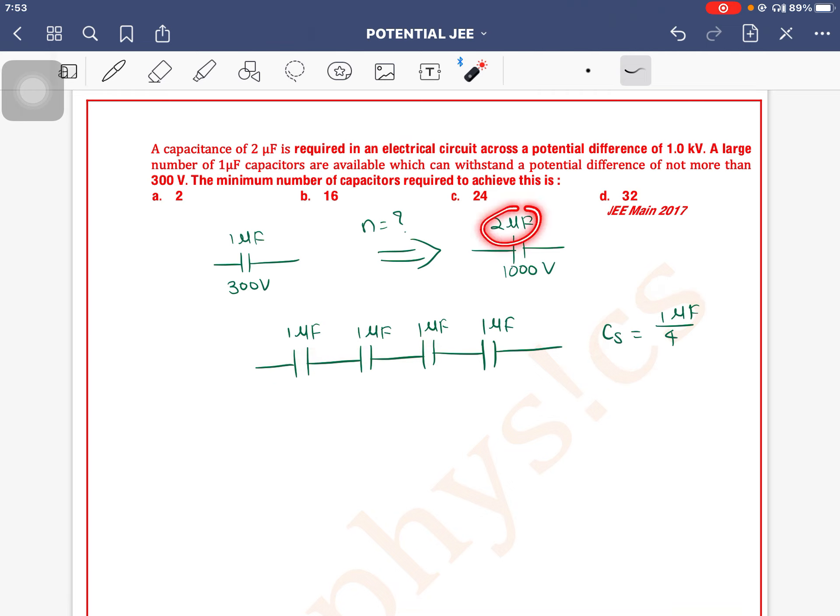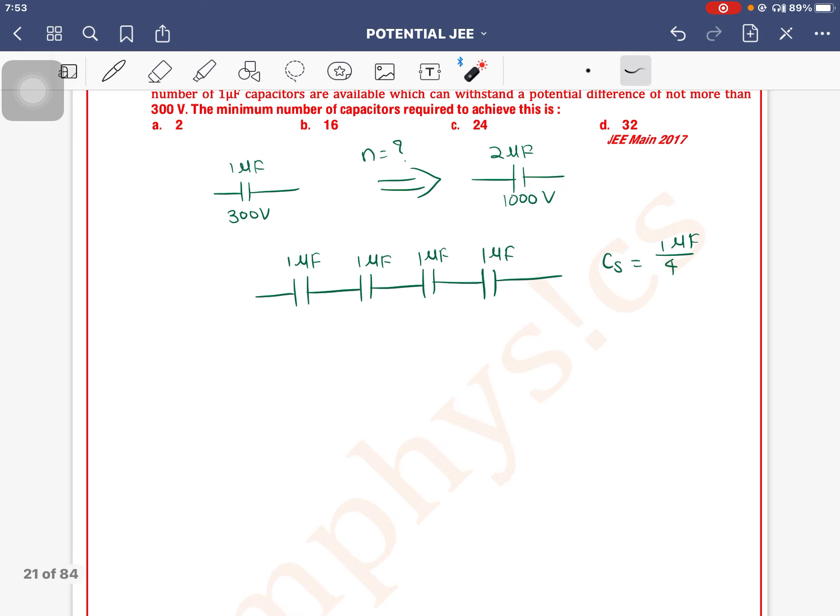To achieve 2 microfarad, I need to connect groups of capacitors in parallel. A group of 4 capacitors in series needs to be connected in parallel with other similar groups.